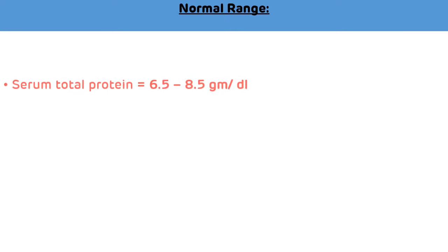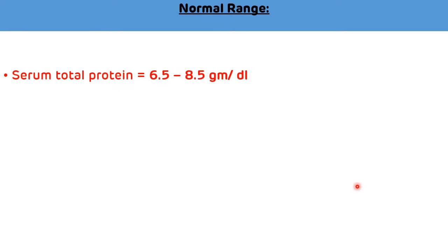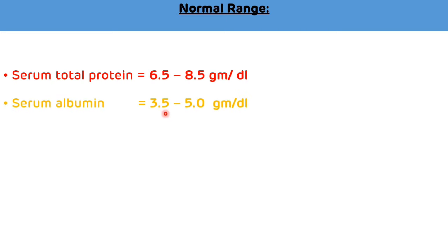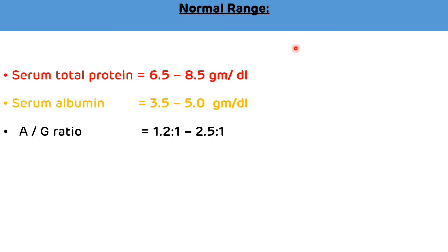Normal values of total protein: normal value of serum total protein is 6.5 to 8.5 g/dL. Normal value of albumin is 3.5 to 5 g/dL. Normal value of AG ratio is 1.2:1 to 2.5:1.